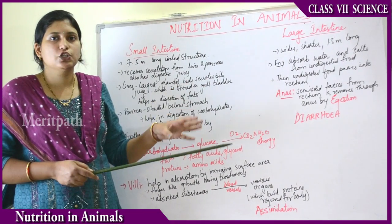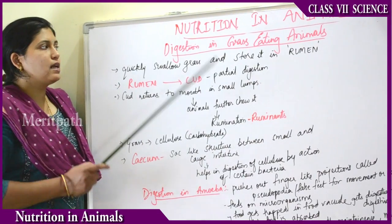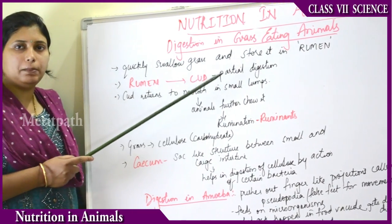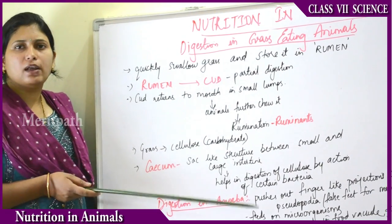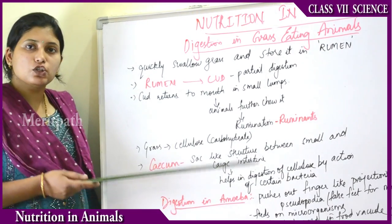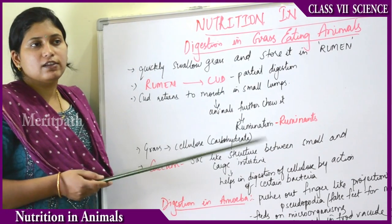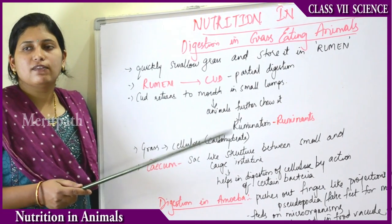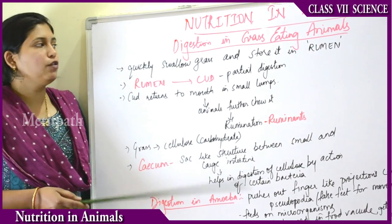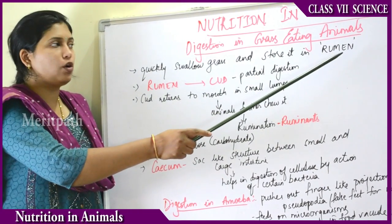Now let's look at digestion in animals — specifically grass-eating animals like cows, sheep, goats, and buffaloes. Whenever these animals get grass, they eat it very fast and store it in a sac-like structure called the rumen. Whenever they are free and at rest, they sit and keep chewing. These grass-eating animals quickly swallow the grass and store it in the rumen.